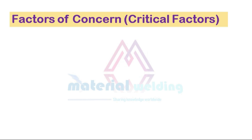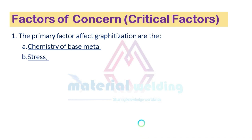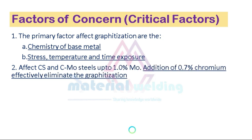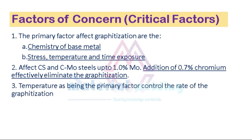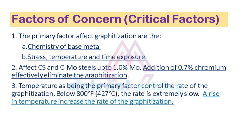What are the critical factors for graphitization to occur? The primary factors affecting graphitization are the chemistry of the base metal, stress, temperature, and time of exposure. It affects carbon steel and carbon-molybdenum steel up to 1% molybdenum. Addition of 0.7% chromium effectively eliminates the graphitization effect in steel. Temperature is the primary factor controlling the rate of graphitization; below 800 degrees Fahrenheit the rate is extremely slow, and a rise in temperature increases the rate.